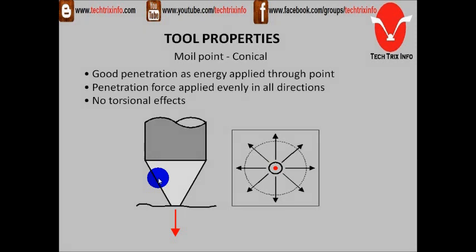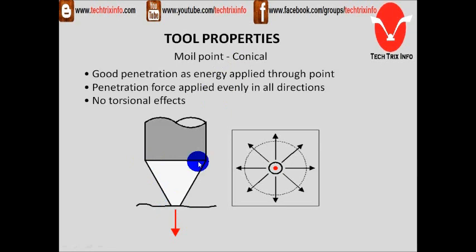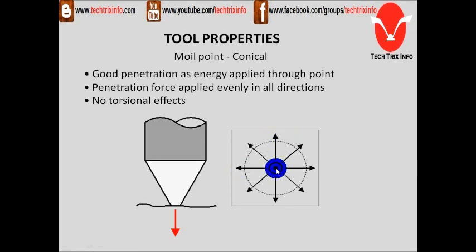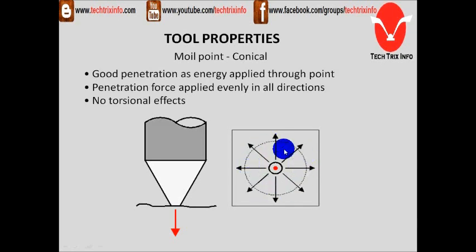Let's see the tool properties of the moil point — the conical one. It is conically designed and has good penetration as energy is applied through the point. Penetration force is applied evenly in all directions with no torsional effect. You can see how the load is applied in a circle evenly on the rock or material being broken.